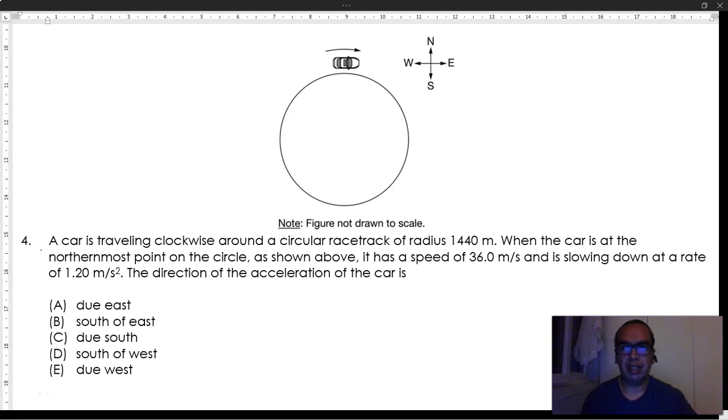Number four: A car is traveling clockwise around a circular racetrack of radius 1440 meters. When the car is at the northernmost point on the circle as shown above, it has a speed of 36 meters per second and it's